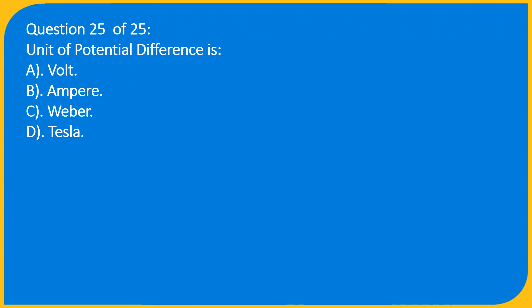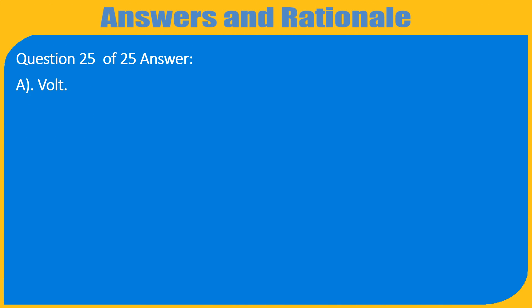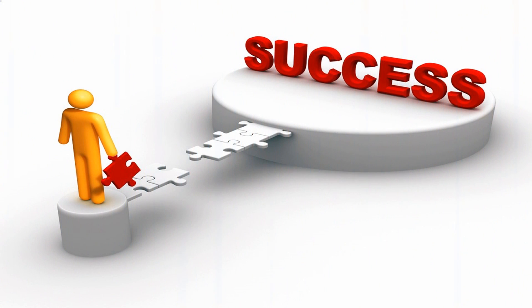Question 25 of 25: Unit of potential difference is — A. Volt, B. Ampere, C. Weber, D. Tesla. Answer: A. Volt.